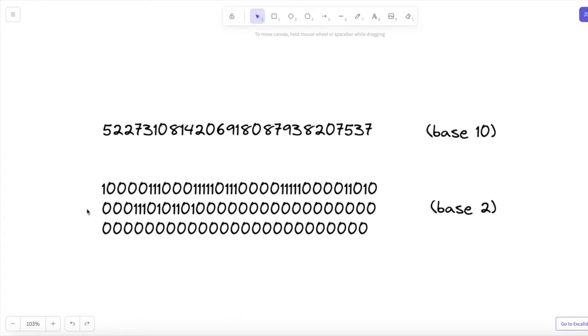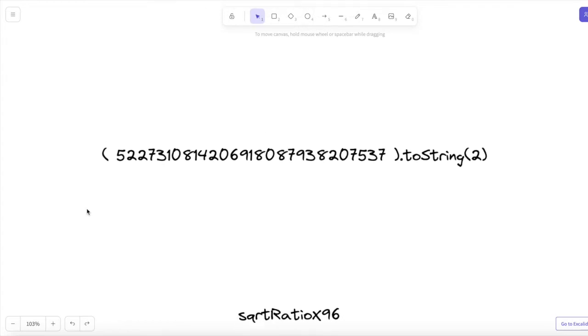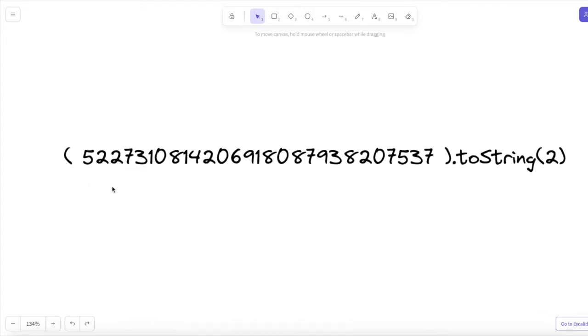And it's really easy to do that conversion. Wrap parentheses around that square root price x96 number, call toString on it, and pass in 2. And that will convert it from base 10 to base 2.